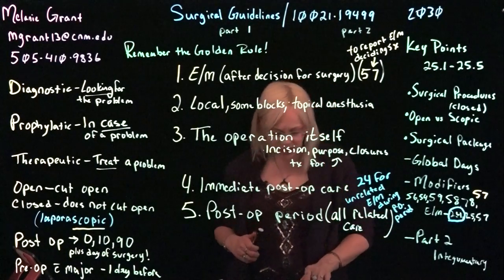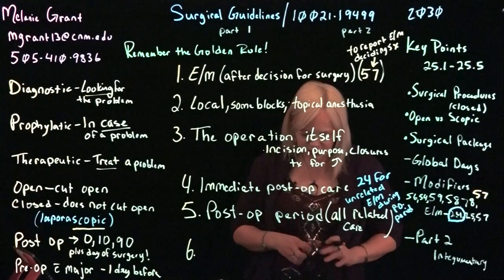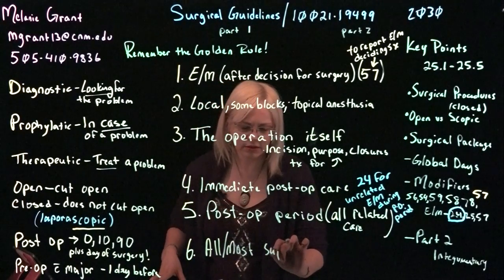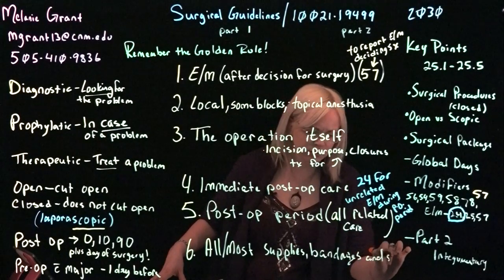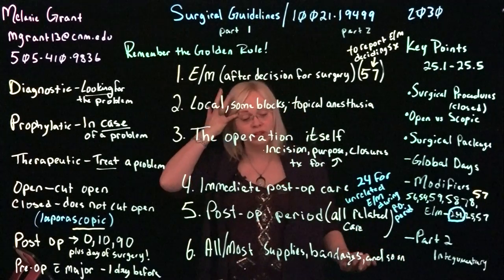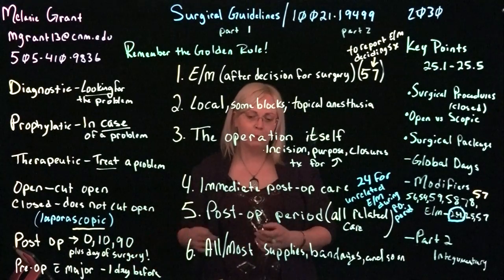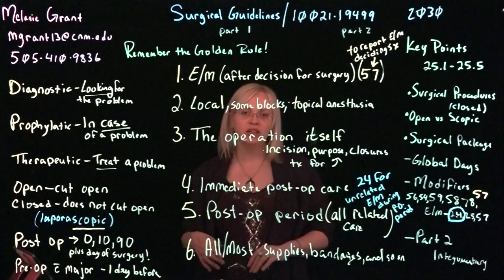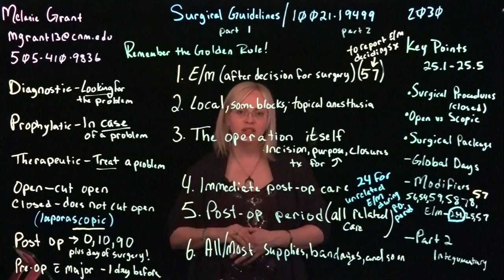The last item included in your surgical care is number six: supplies provided by the physician's office. For the most part, all or most supplies — bandages and so on — are included. Sometimes you will add a casting charge or send the patient with a DME service billed separately, but any supplies they need like bandaging, additional gauze, or medications taken while in the surgical office are part of that visit. We don't code separately for medications given to help with pain.